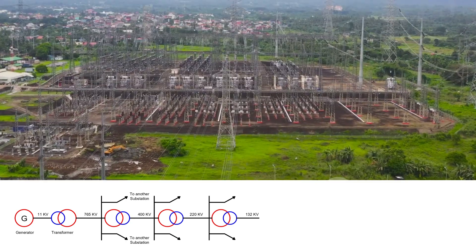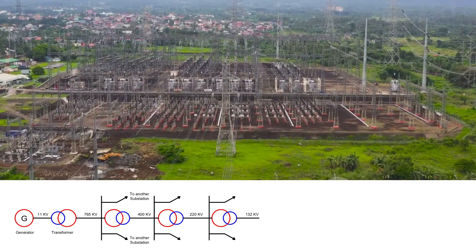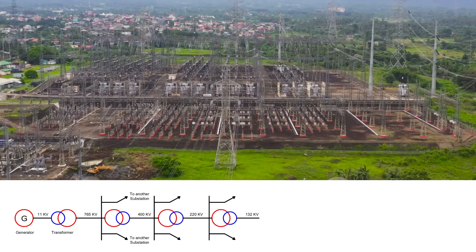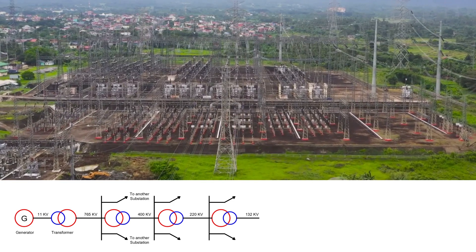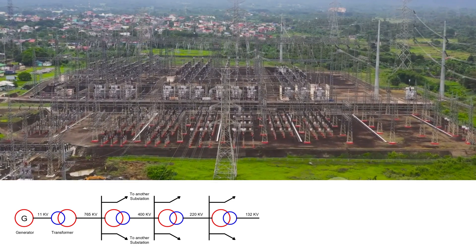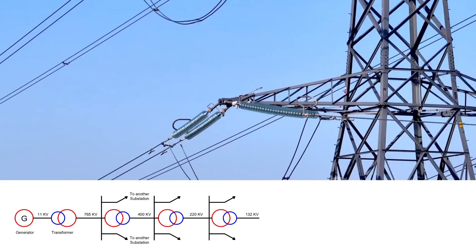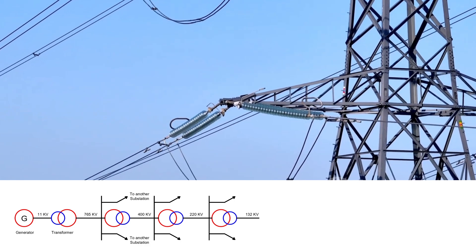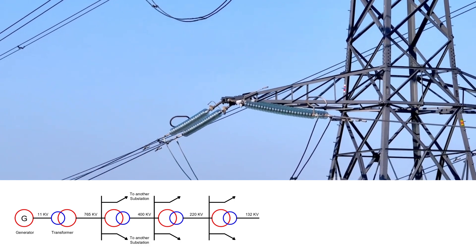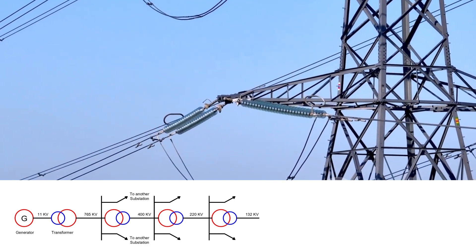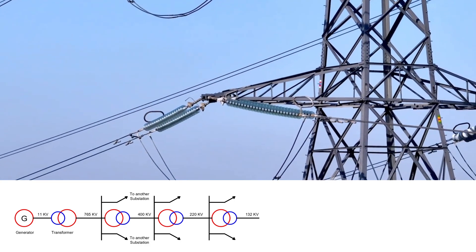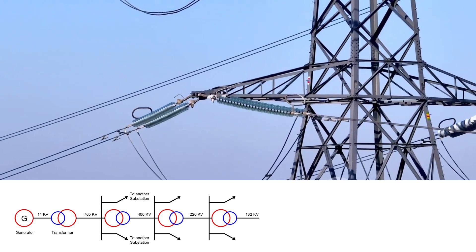This stepped reduction ensures that the system remains safe, efficient, and stable across various regions and load centers. These transmission lines span hundreds of kilometers, forming the backbone of the national grid and connecting power plants to major cities and industrial hubs.